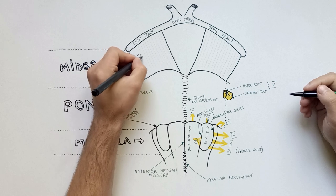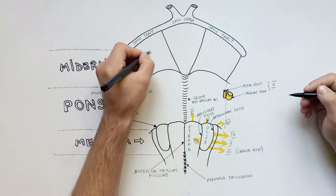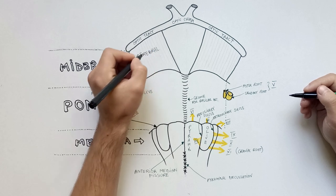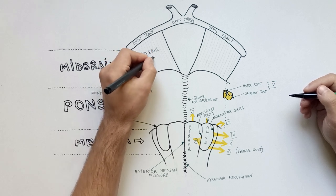The ventral surface of the midbrain presents two cerebral peduncles which emerge from the cerebral hemispheres and converge downward to enter the pons.